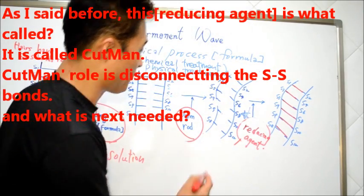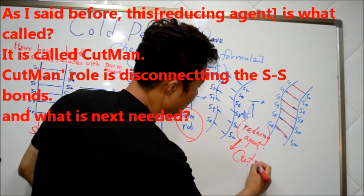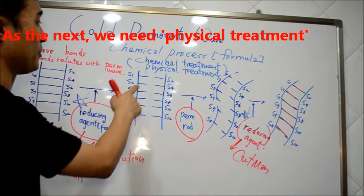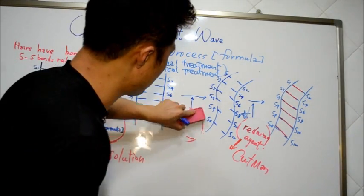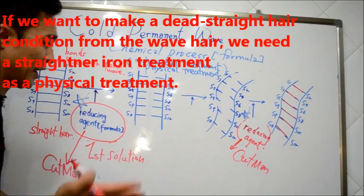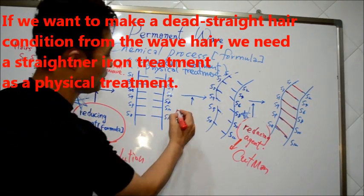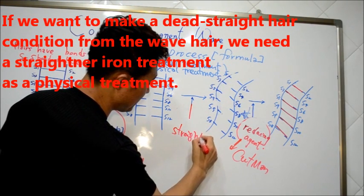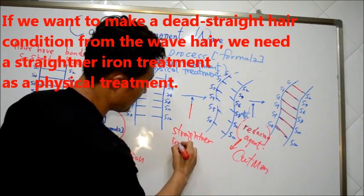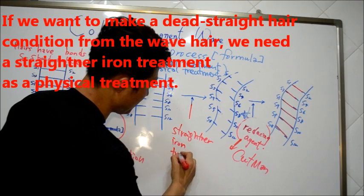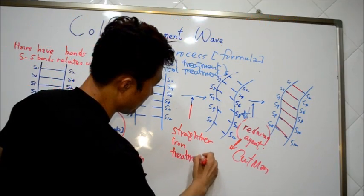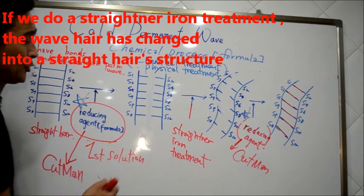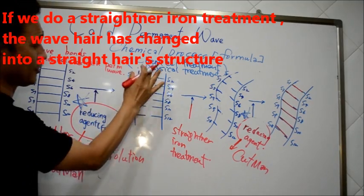As I said before, this disconnects them. And next we need physical treatment. If we want to make it straight, we need straight iron treatment. If you use straightening iron treatment, the hair has changed to straight structure.